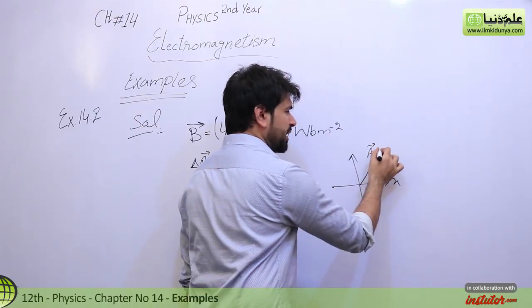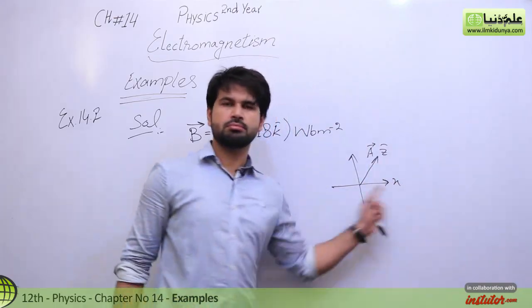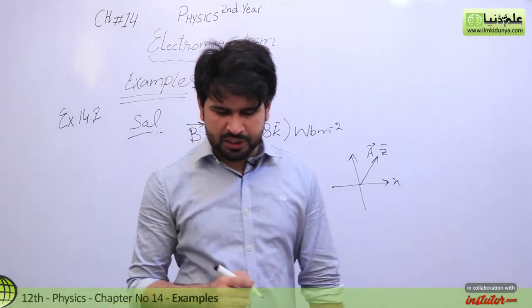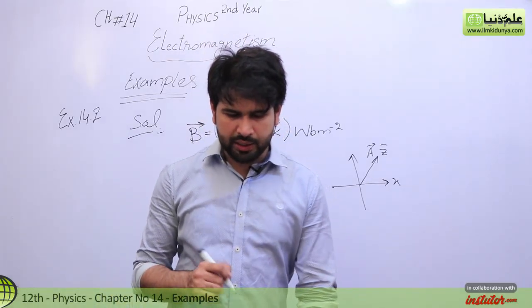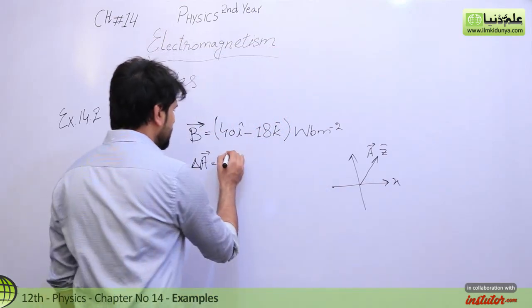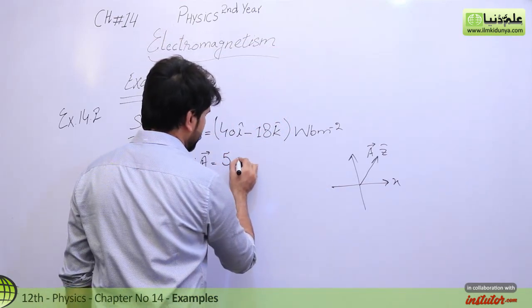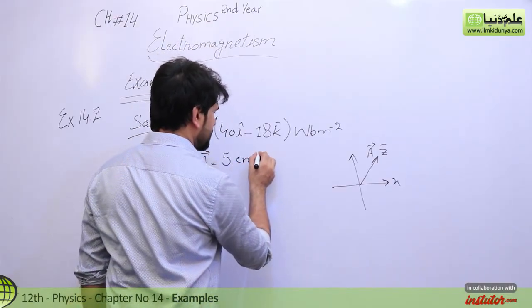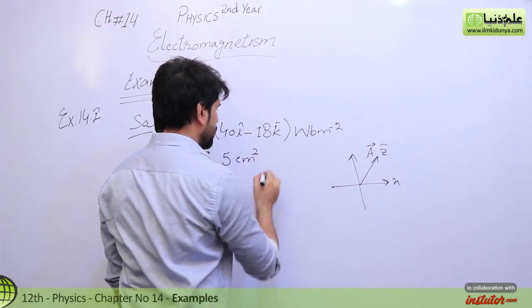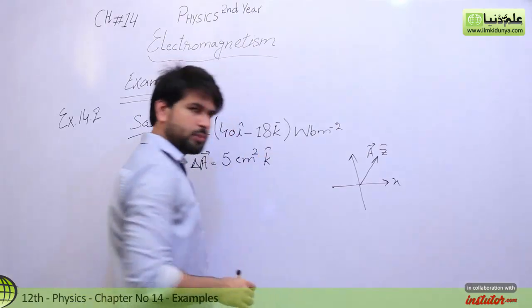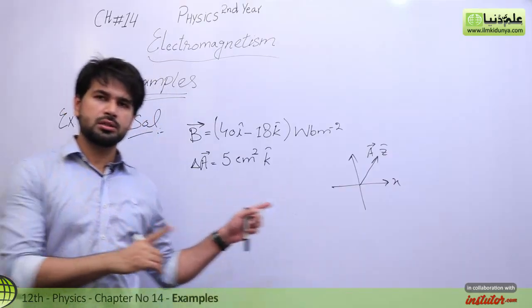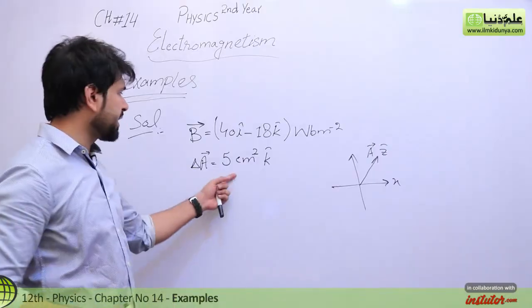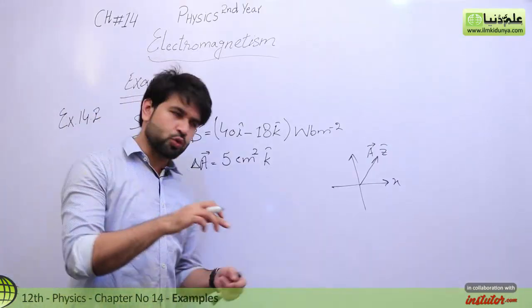The area vector is in the direction of z. Since the loop lies in the xy-plane, the area vector points in the z direction. We need to convert the area first to meter square.